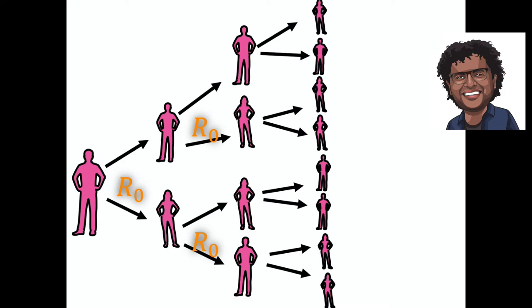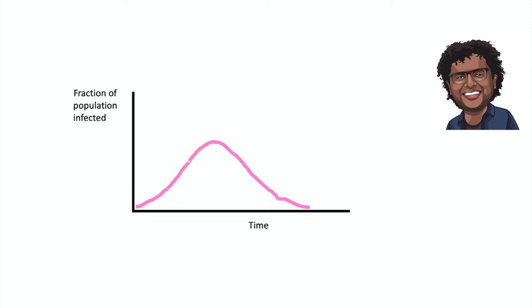This is referred to as the basic reproduction number, also known as R0. At the start of an epidemic, a single infected individual will infect R0 more individuals, after which the newly infected individuals will also infect R0 more individuals, until the epidemic reaches a peak and slows down.